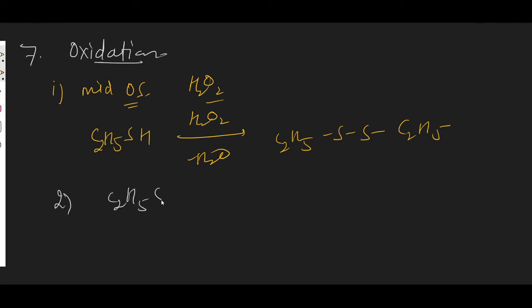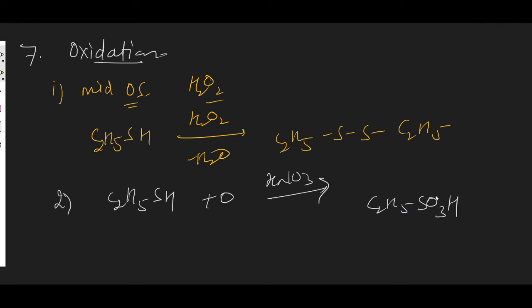However, if you use a strong oxidizing agent like nitric acid, the product obtained is sulfonic acid. So in oxidation of thiols: mild oxidizing agent gives disulfide formation, and strong oxidizing agent gives sulfonic acid formation.